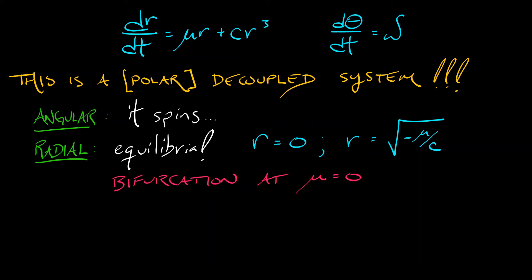Let's think about this using tools from one-dimensional dynamics. Let's say, for simplicity, that c is equal to negative 1. So that, in the radial variable, what we have is dr dt equals mu times r minus r cubed. Hey, wait. I think I've seen a system like that before. This reminds me of a pitchfork bifurcation, a supercritical pitchfork bifurcation.